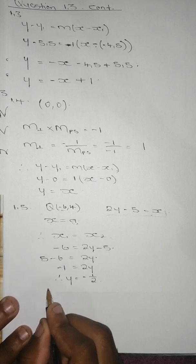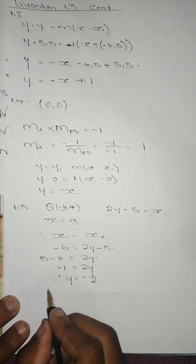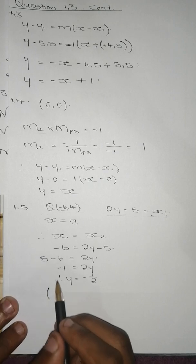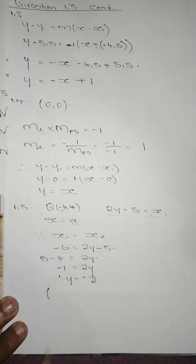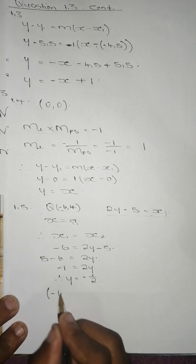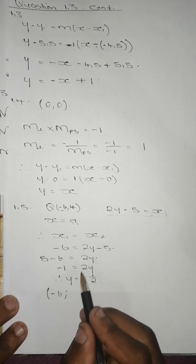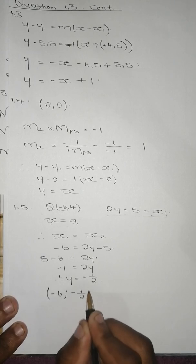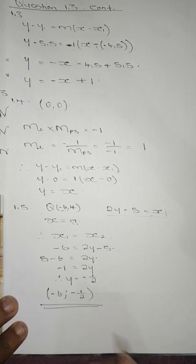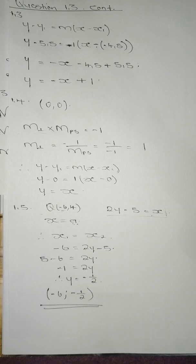So the point of intersection has x coordinate negative 6, since that value does not change on the vertical line, and y equals negative one half. Therefore the coordinates of the point of intersection of the two lines are (negative 6, negative one half), and we are done with the coordinate geometry section.